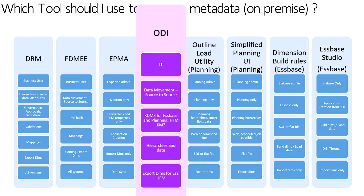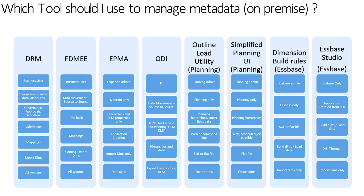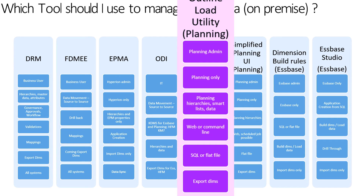If you're a Hyperion Planning person, you also have the ability to manage your metadata using the Outline Load Utility, which comes free with your Hyperion Planning purchase. It is for the planning administrator only and just for Hyperion Planning. If you need to pull a dimension or update some planning metadata, this is a great simple tool. You can connect to SQL sources or import flat files, and there is both a web interface and a command-line version. You do have the ability to export out dimensions using the Outline Load Utility.